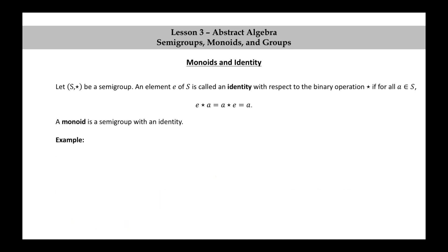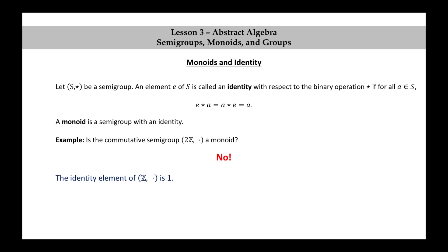Another example: is the commutative semigroup 2Z together with multiplication a monoid? Remember that 2Z is the set of even integers. The answer is no. The identity element of the integers together with multiplication is one, but the element one is missing from 2Z. One is odd — it's not an even integer.